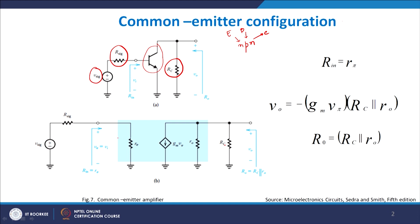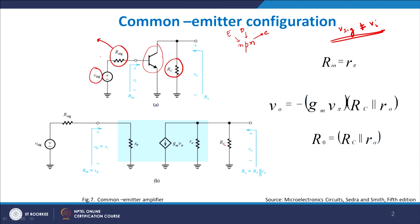An important point: Vsig is not equal to Vi. The actual input voltage to the BJT will be slightly less than the signal voltage because of the presence of RSig. Since voltage sources have a finite output impedance, there will be a voltage drop across that impedance, and the actual potential applied to the base-emitter junction of the BJT will be relatively smaller than Vsig.